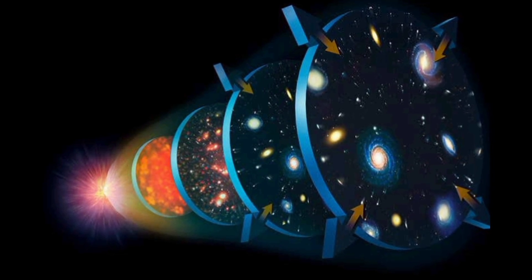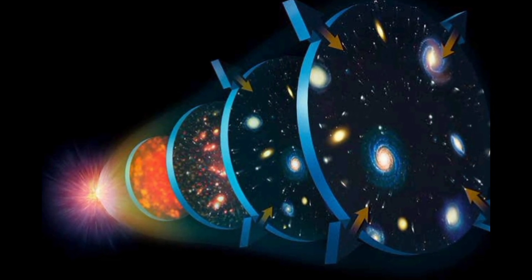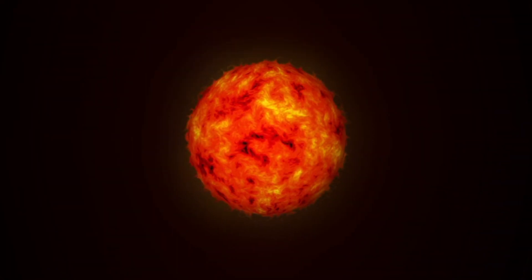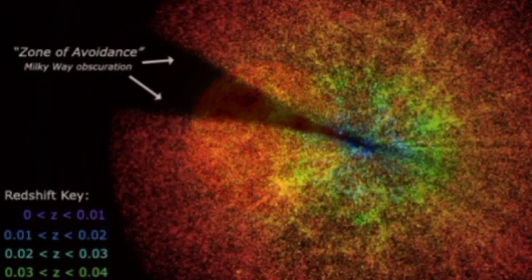For years, scientists calculated the universe's age in two different ways. First, we figure out how much time passed since the Big Bang. Second, we study the oldest stars using something called redshift.